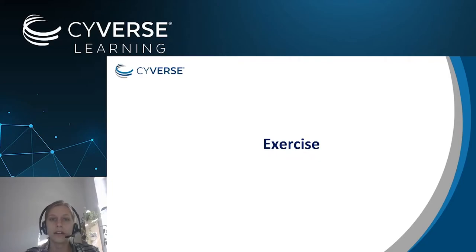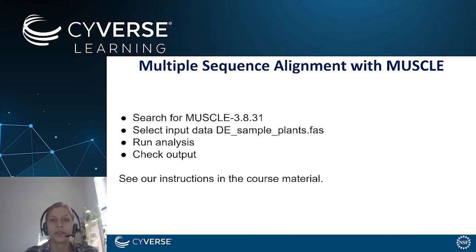So now you should have an idea of how to start an analysis within the CyVerse discovery environment, how to monitor this analysis, and how to access the results. In the exercise, we ask you to do exactly the same on your own: search for the MUSCLE tool, select the correct input data, run the analysis, and then check the output. We also provided instructions in our course material that should guide you through this exercise step by step.